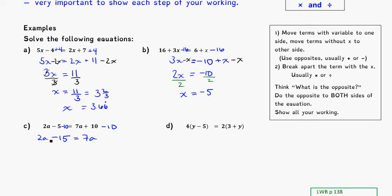My next step is to get that 2a to the other side. There's no sign in front, so I assume it's a positive 2a. The opposite would be to take away 2a on both sides. So 2a minus 2a cancel, leaving me with negative 15 is equal to 7a minus 2a. 7 minus 2 is 5a. My last step: I have 5 times a, so I'm going to divide by 5 on both sides.